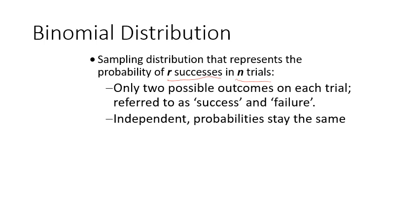It needs to be pointed out that with the binomial distribution, it's also important that you have only two possible outcomes: success or failure. Even though a die has six sides, when you're looking at a probability using the binomial, you change that from six different outcomes into success and failure. A success is rolling a one; a failure is rolling anything other than a one. A big factor of binomial is that the trials are all independent — the probability stays the same from one trial to another.